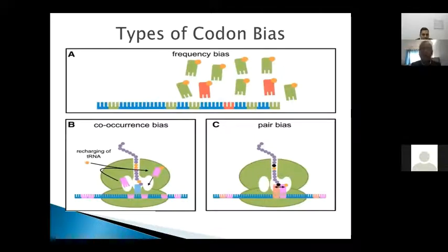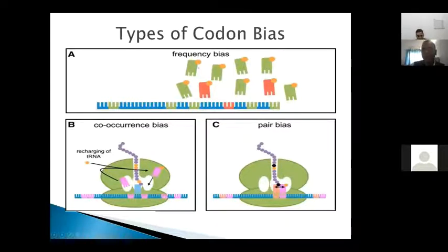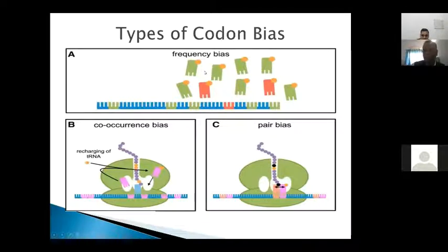There are types of codon biasing. The first is frequency bias — where one type of codon is more abundant and the corresponding tRNA is more available, while another codon type has less tRNA. This is called frequency bias.